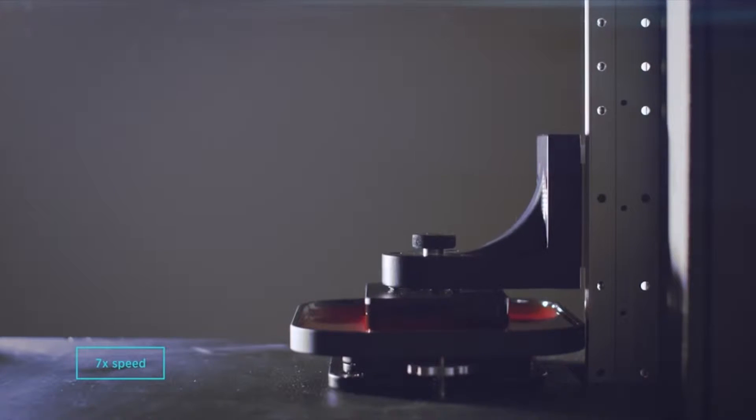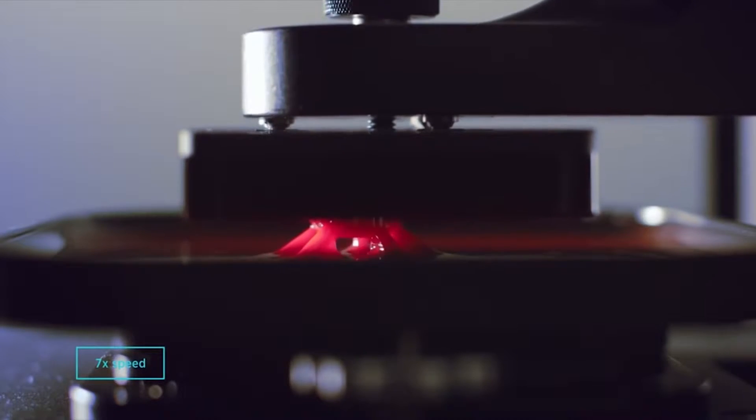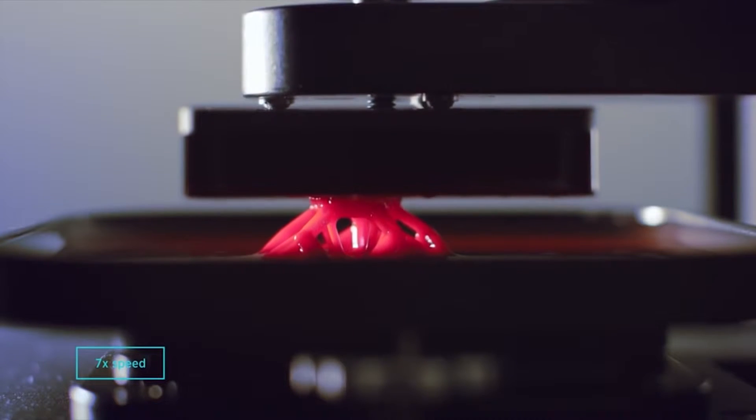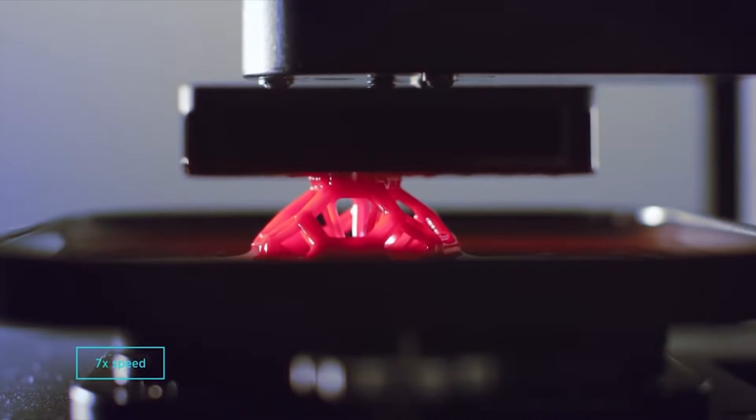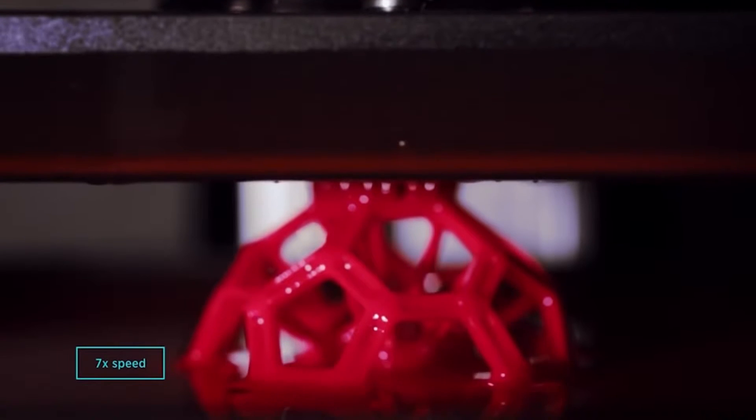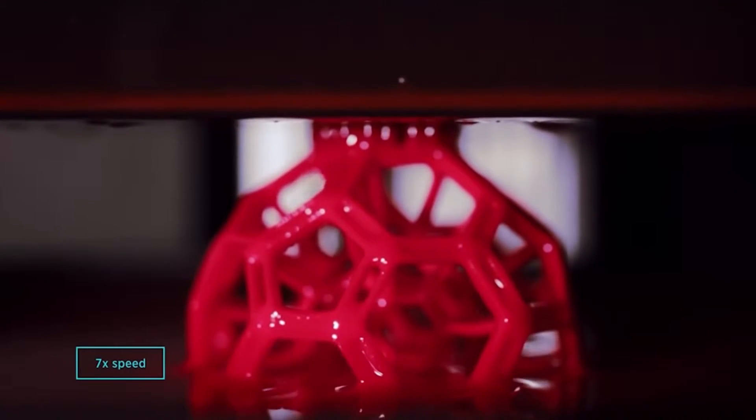The new way of printing was called CLIP – continuous liquid interface production. Unlike stereo lithography, the printing process is continuous, and it uses light and oxygen to solidify a special kind of resin.